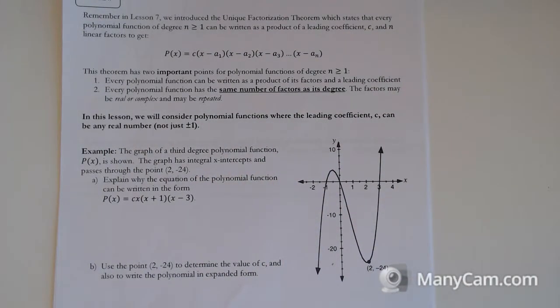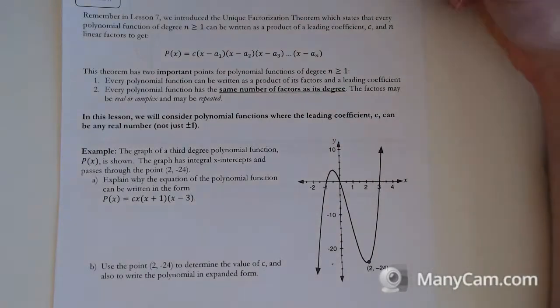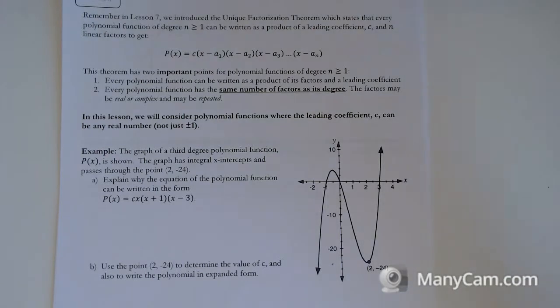Alright, lesson 10, our final lesson. In this one, we're just really applying everything we already know to one new case, which is polynomials where the leading coefficient, our c value, is not 1 or negative 1 anymore. Which just means we're going to be starting all these equations kind of the same way we've been doing, but we need to solve for c kind of at the end by subbing in some point or doing some other things.